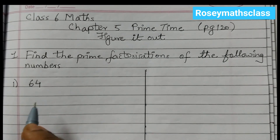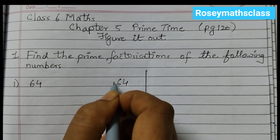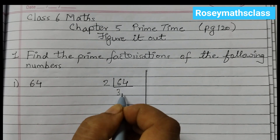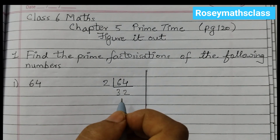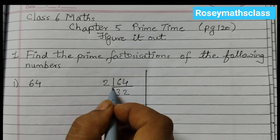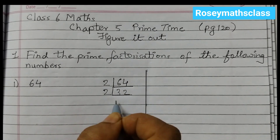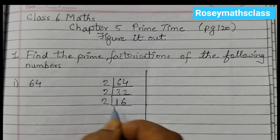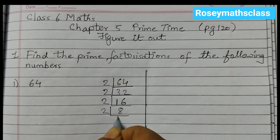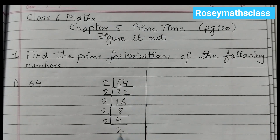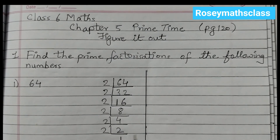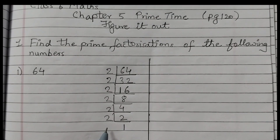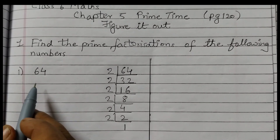The first one is 64. We will write 64 and start with the smallest prime number which is 2. We keep dividing by 2 — 64 ÷ 2 = 32, 32 ÷ 2 = 16, 16 ÷ 2 = 8, 8 ÷ 2 = 4, 4 ÷ 2 = 2, 2 ÷ 2 = 1. We go on dividing like this till we get 1. Now we write all these numbers — these are the prime factors of 64.